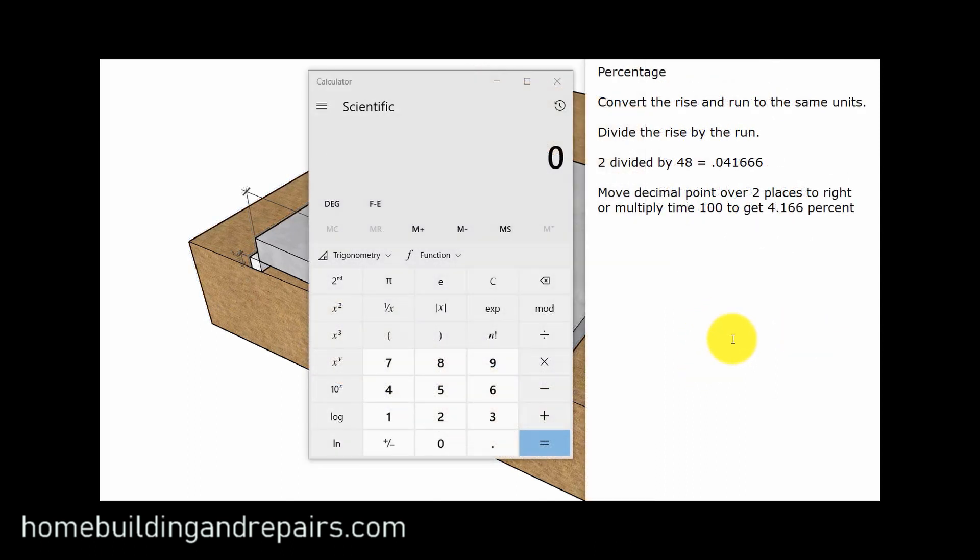Now, let's take a look at how to create a percentage. Convert the rise and run to the same units, divide the rise by the run. So here we're going to have 2 divided by 48, and it's going to give us 0.0416. We can either move the decimal point over two places to the right.